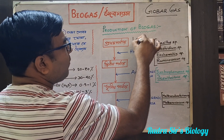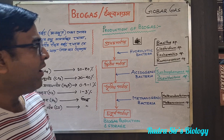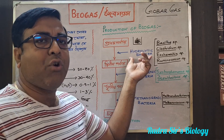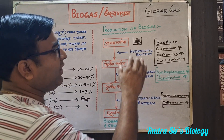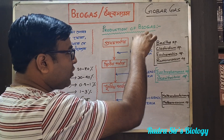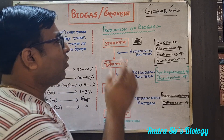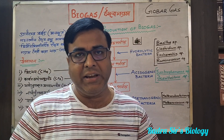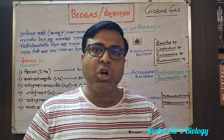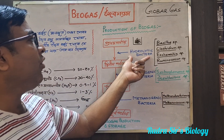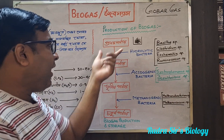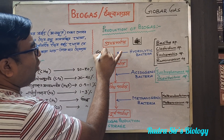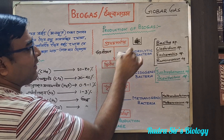This is the first stage where we have to take care of the bacteria, which is hydrolytic bacteria. This hydrolytic bacteria is used to break down material. The bacteria involved include Bacillus, Clostridium, Esterisacea, and Ruminococcus — these are hydrolytic bacteria. These bacteria work on the organic material in the first stage.